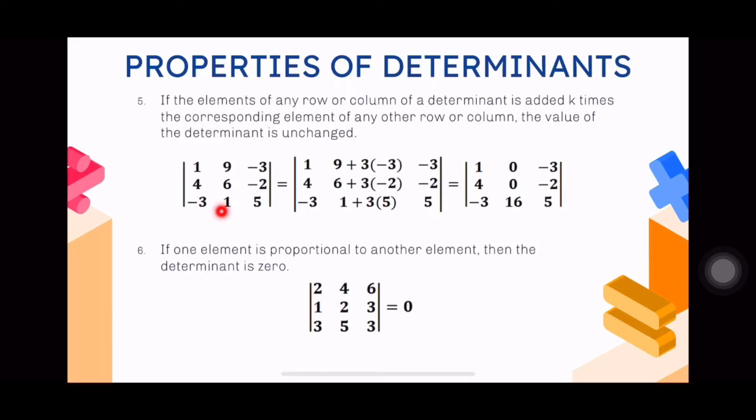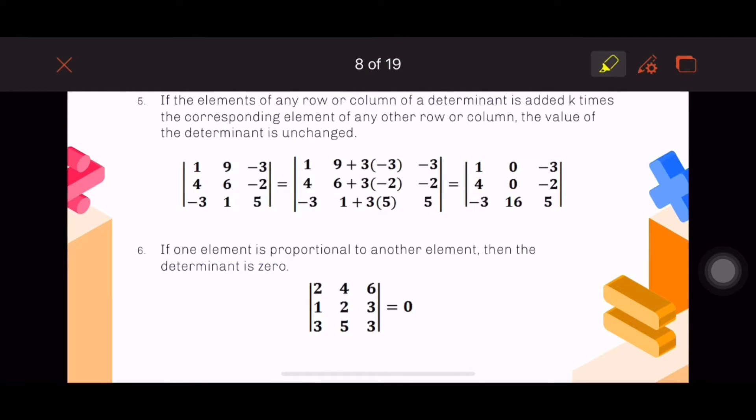Number six: if one element is proportional to another element, then the determinant is zero. Proportional means a certain factor is used and multiplied to one row or column, and that results in the values of another row or column. As you can see here, which elements are proportional? The first and second rows are proportional to each other.